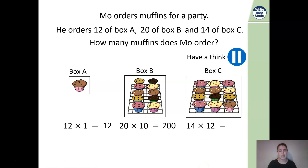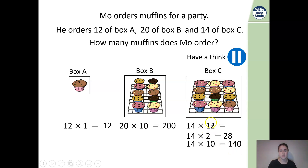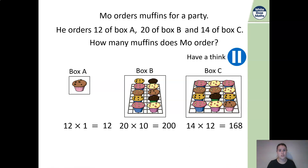Here I can use my multiplication skills for two-digit by two-digit numbers. 14 times by 2 is 28, and 14 times by 10 is 140. Adding those together gives me 168. The question asks how many muffins Moe orders altogether, so I need to add all those answers together: 200 add 168 add 12 gives me 380.